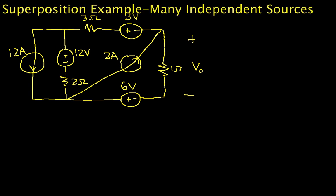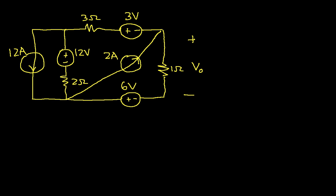Welcome to this video. In this video, we will use superposition to find V0 in the circuit shown below. The primary purpose of this circuit is to have as many independent sources as you can in a single circuit without getting completely ridiculous, which I think we probably already have.